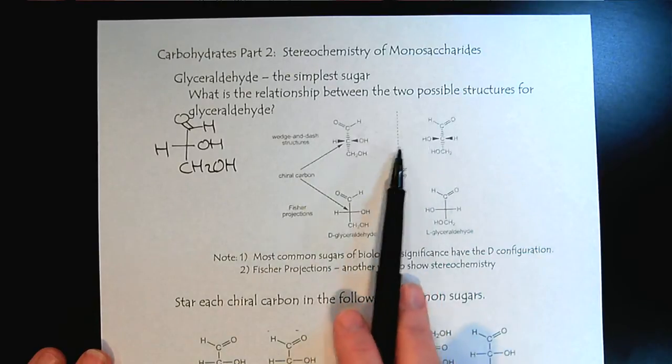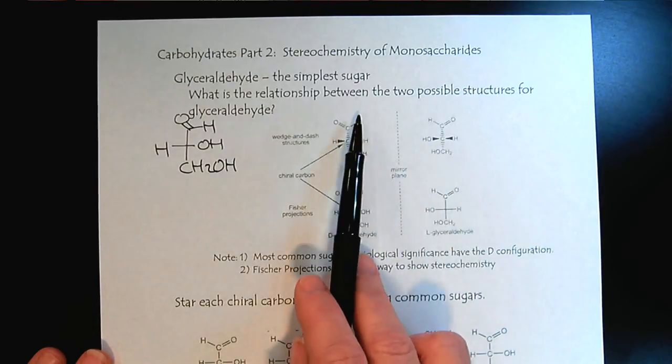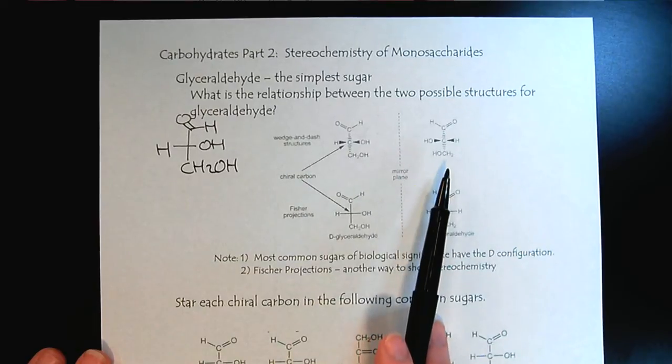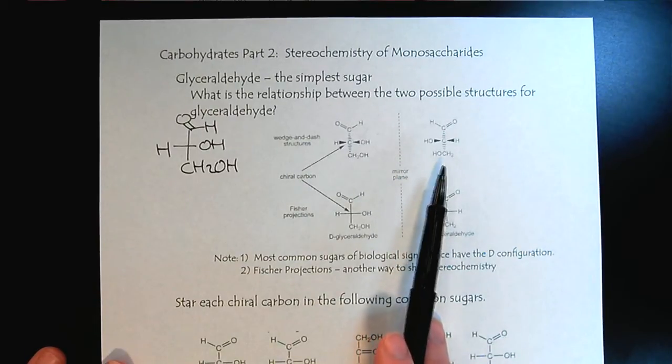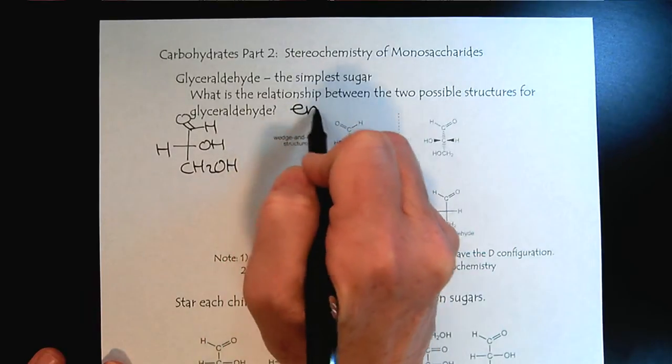Now we can make the mirror image. So now we have the two mirror images. So what is the relationship that we use to describe those? Remember we called them enantiomers.